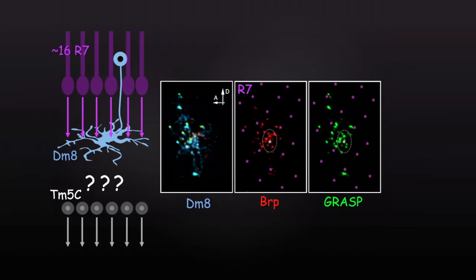Using this method, I found that the synaptic connections between Dm8 and Tm5c neurons are largely concentrated in the center of Dm8's dendritic field, suggesting a pooling mechanism where each Dm8 pools multiple R7s to one Tm5c for increasing UV sensitivity.